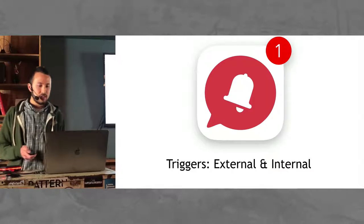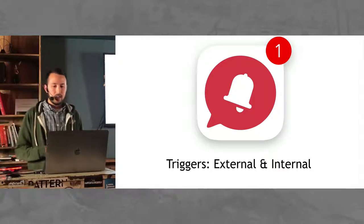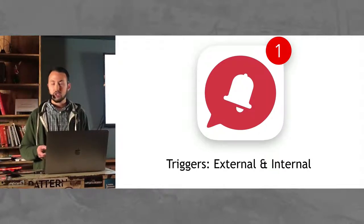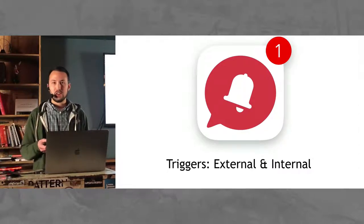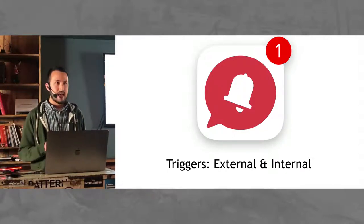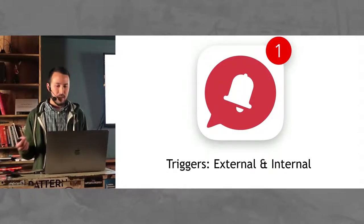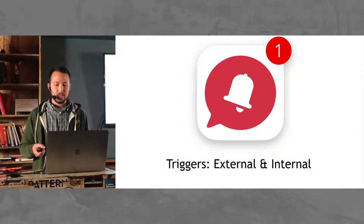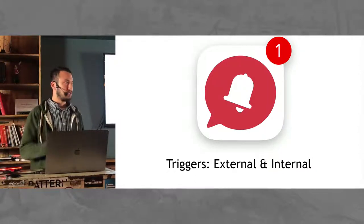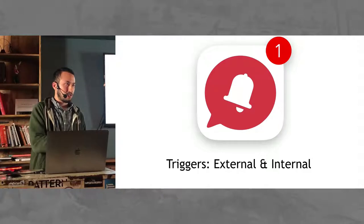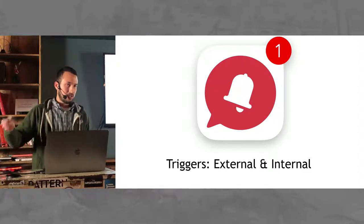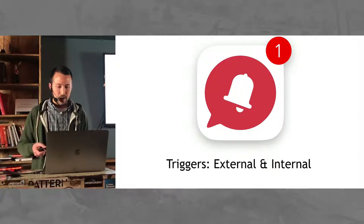So the first thing is trigger. There are two types of triggers. External triggers are tangible and they're probably the first interaction that somebody's going to have with your product or application. This would be something as simple as your friend told you about a product — that is an external trigger, that is the reason that you go to the product.